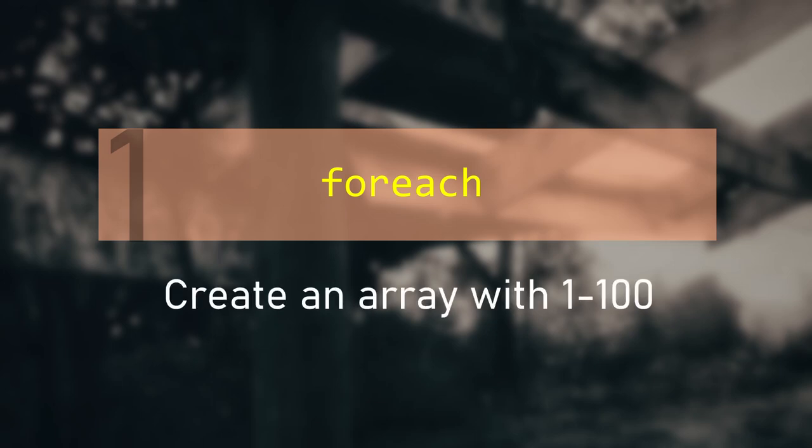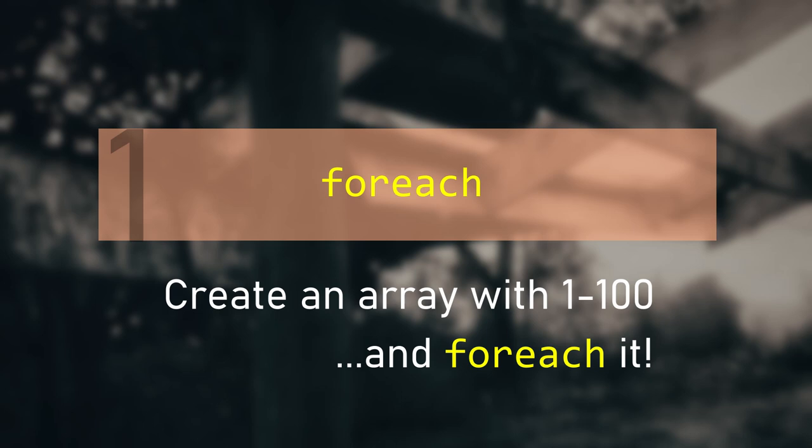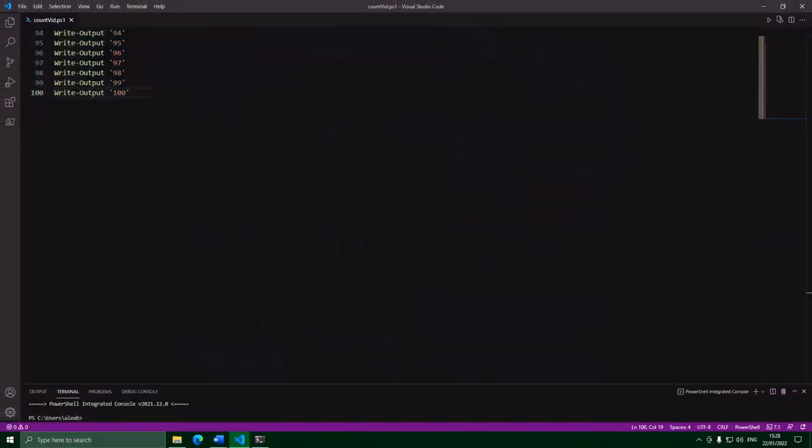One way you can do counting is with a foreach. You can create an integers array with all the numbers from 0 to 100 in it and then foreach it. PowerShell has an operator to create an array filled with integer items between two numbers, and that's going to let us do this very elegantly.